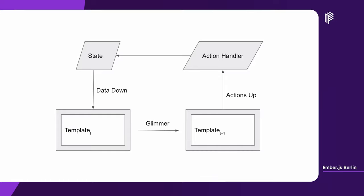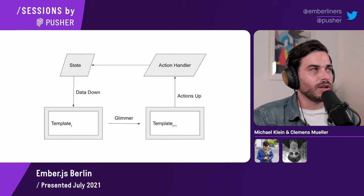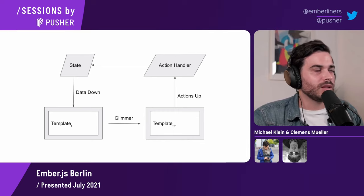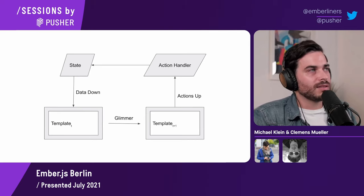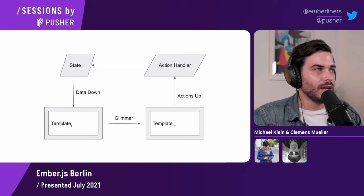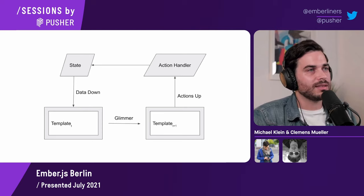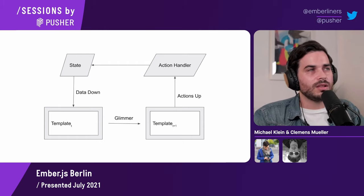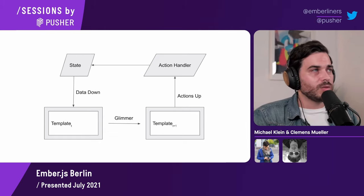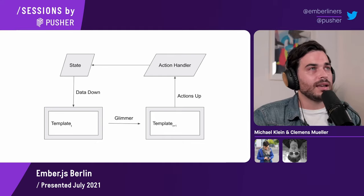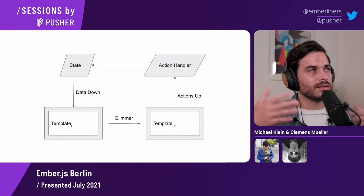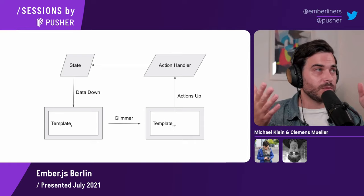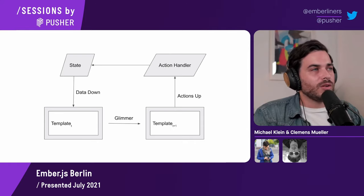Whenever you want to change something in your application or enable users to change something, you send an action up. Back in the days we really had action bubbling, but nowadays it's a little bit different because we pass down action handlers and call them directly. In essence, you pass an action up and then some action handler does something and updates the state. We have an idea that this originated in the React ecosystem — or at least that's what we heard back in the day when this pattern was introduced. Before that we had two-way data bindings and observers, and data down actions up was obviously a better solution.